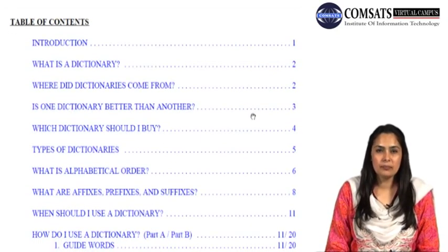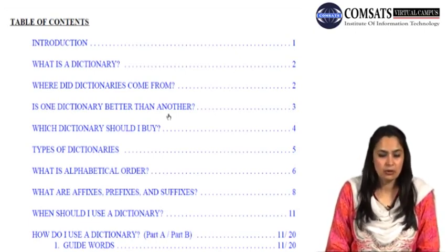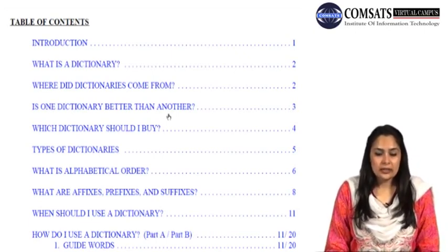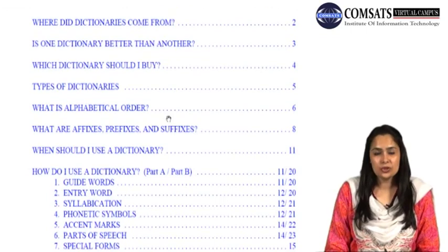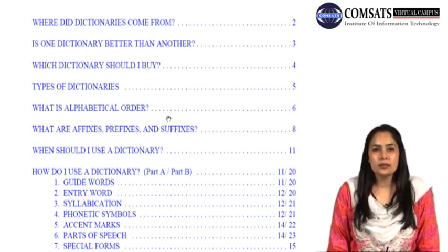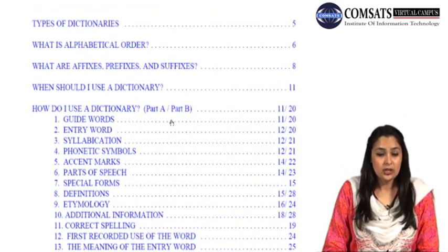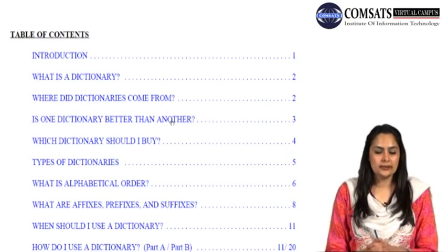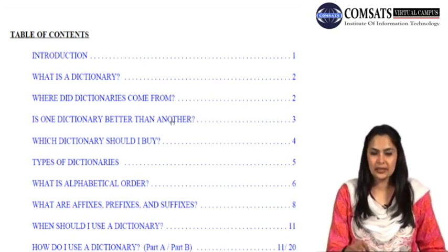We will see how a dictionary is introduced, what it is, where dictionaries came from, and whether one type of dictionary is different from or better than others — which dictionary should you as a student buy. Types of dictionaries, what is alphabetical order, and affixes — prefixes and suffixes — that's what we're going to briefly talk about. When should I use a dictionary? It's not just to identify the meaning of a word; sometimes students practice spellings, or want to know more about the origins of different words. This resource is very useful because it has a lot of exercises, and you can find answers at the end of the same resource.